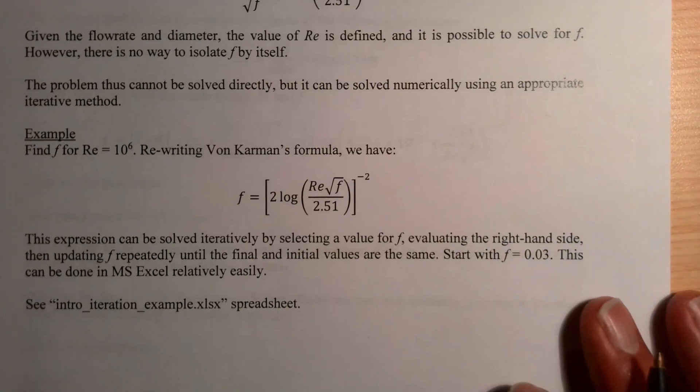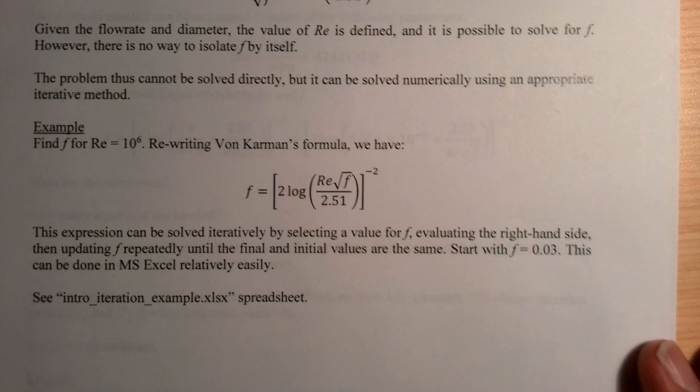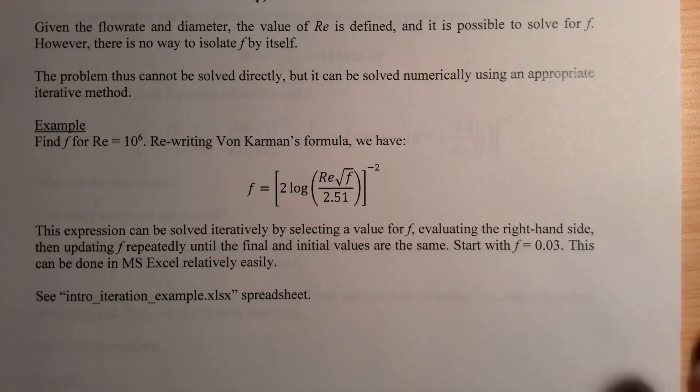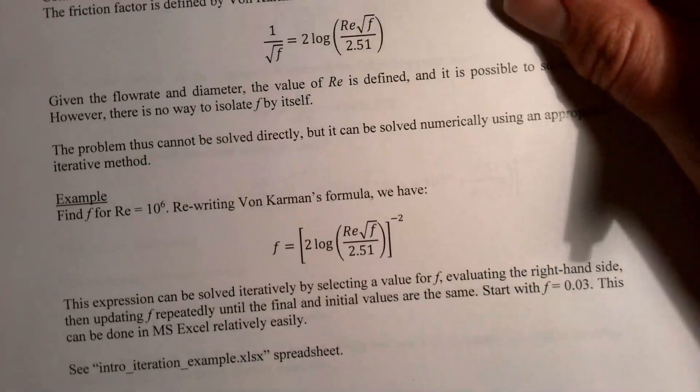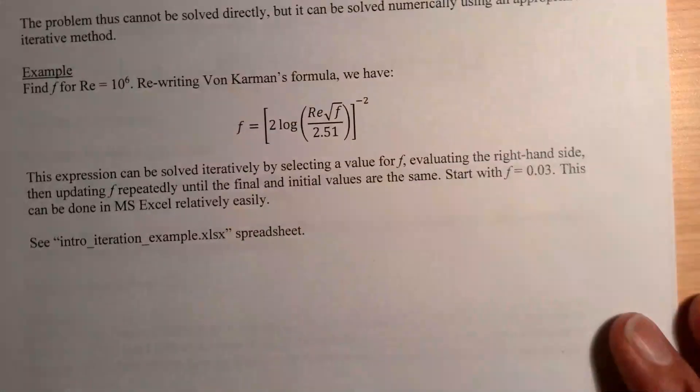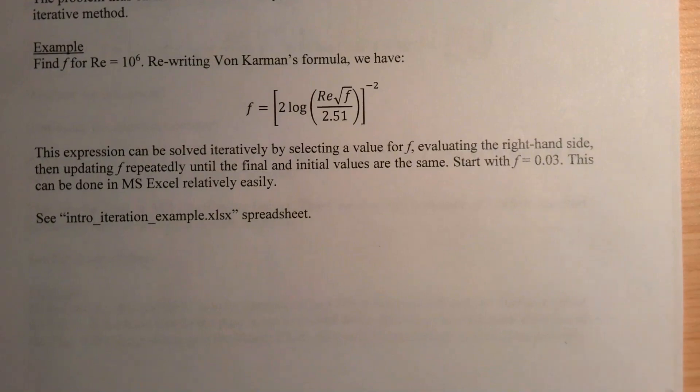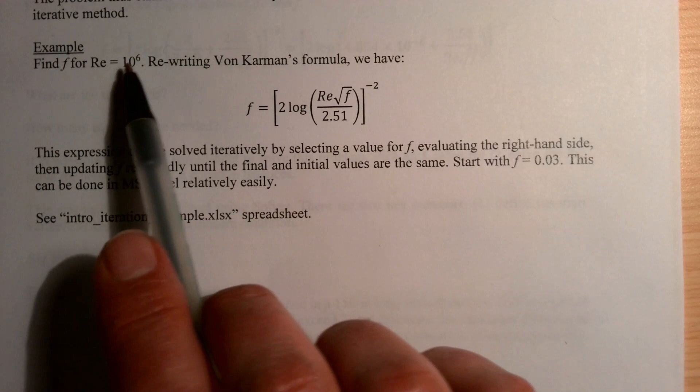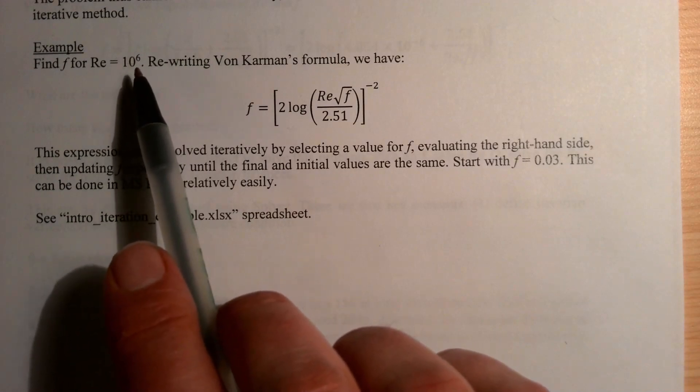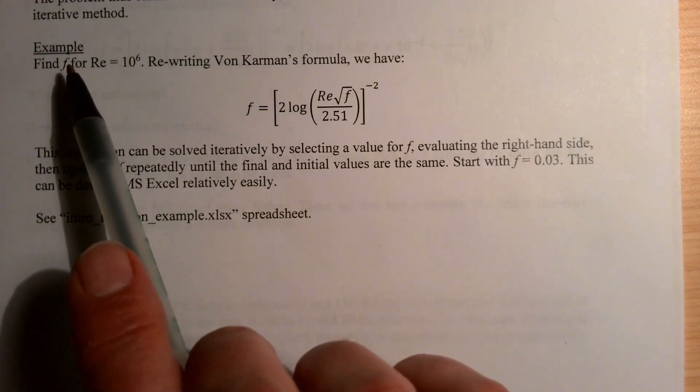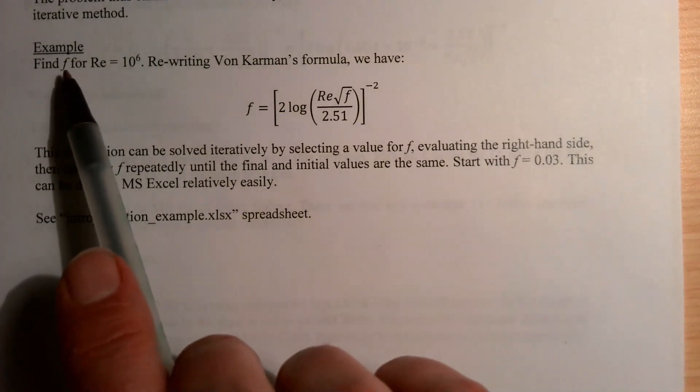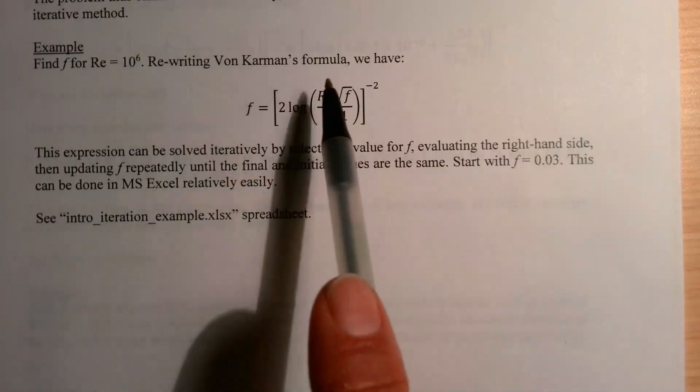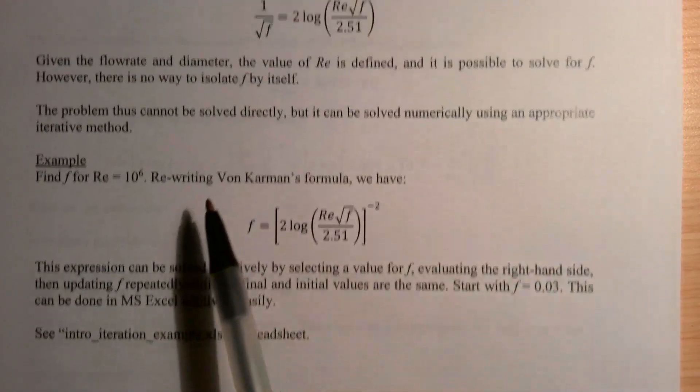The way to do that is just basically guessing a solution, a value for f, and then seeing if that value is right. So I want to show a quick example here of how you can apply that. Let's say that the Reynolds number for a system is 10 to the sixth power—that's a perfectly reasonable number that you might see in a real system for like water flow or something else in a large pipe.